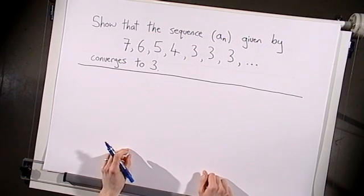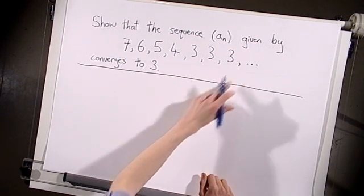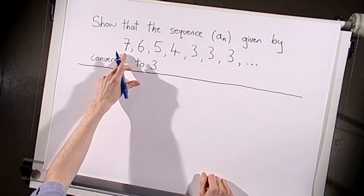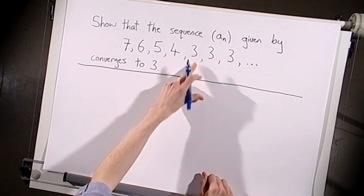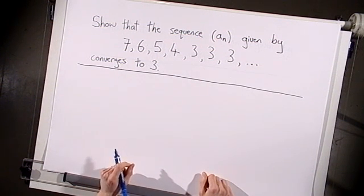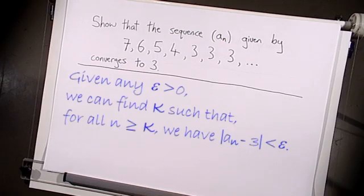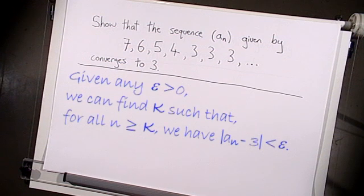In this example, we're asked to show that this sequence converges to 3. So here, a₁ is 7, a₂ is 6, and from a₅ onwards, all the terms are equal to 3. What we need to do is show that this sequence satisfies the definition of what it means for a sequence to converge to 3. So we need to show that, given any positive epsilon, there exists an integer k such that for all n greater than or equal to k, the distance between aₙ and 3 is less than epsilon.